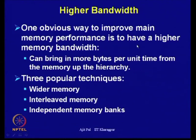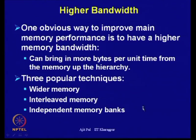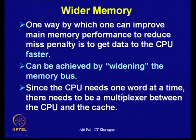One obvious way to improve main memory performance is to have higher memory bandwidth, bringing more bytes per unit time from memory up the hierarchy. By wider memory, we mean increasing the memory bus width. Normally the width of the bus is the same as the word size of the processor — 32-bit for a 32-bit processor. We would like to make a wider bus that transfers more words. Since the CPU needs one word at a time, there needs to be a multiplexer between the CPU and cache.